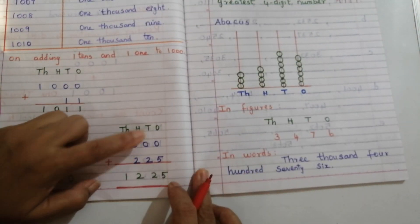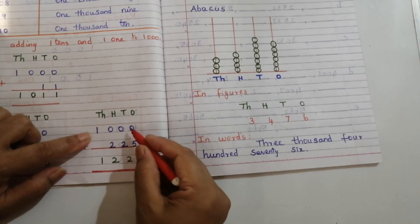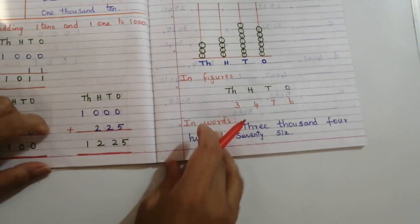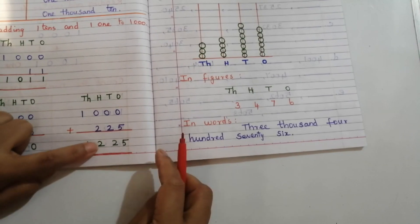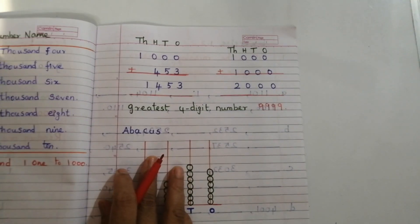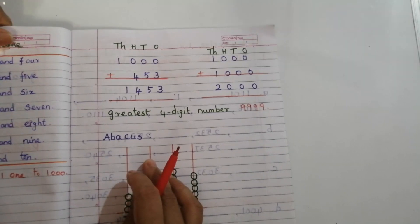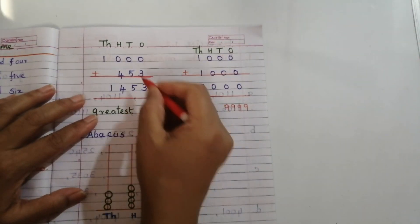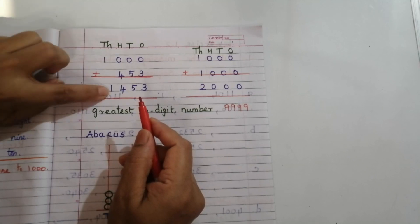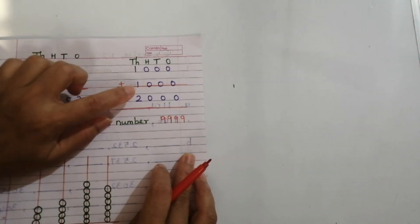Adding two hundreds, two tens, and five ones to 1000 gives 1225 — one thousand two hundred twenty-five. Adding four hundreds, five tens, and three ones to 1000: ones place 3, tens place 5, hundreds place 4, thousands place 1 — giving us one thousand four hundred and fifty-three.